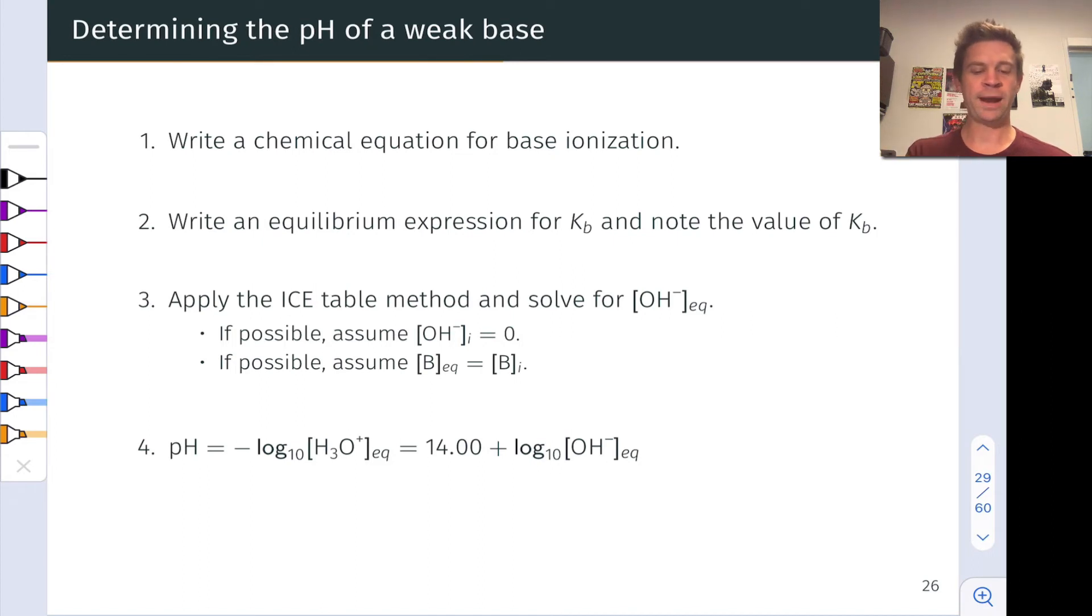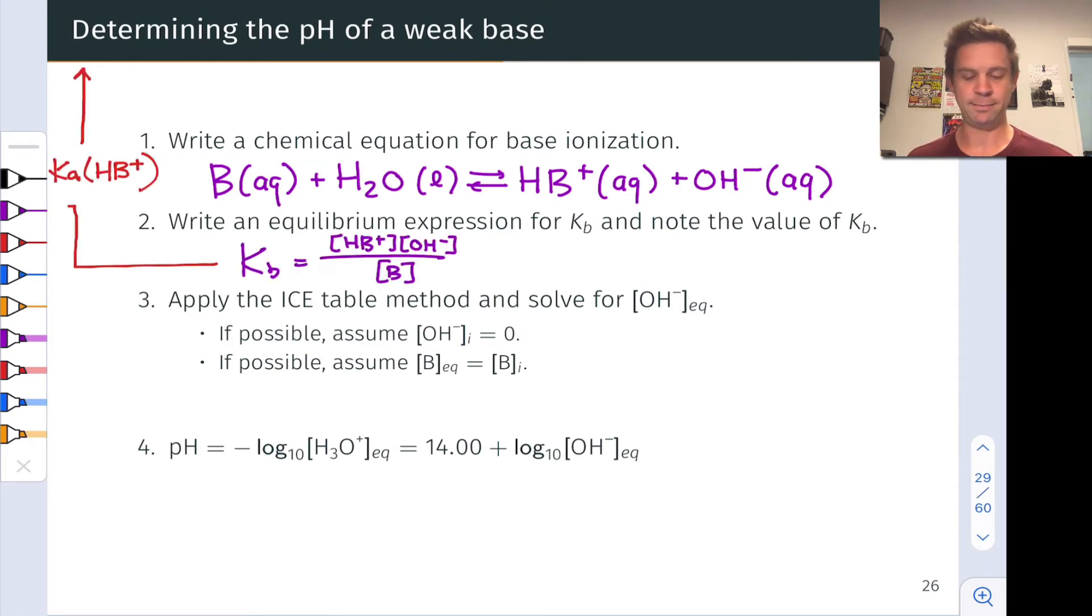we're going to write a chemical equation for base ionization, the reaction of the base with water, to produce the conjugate acid and OH⁻. This corresponds to Kb, the equilibrium constant of this reaction is Kb, and Kb is equal to HB⁺ times OH⁻ molarities divided by the B molarity, all at equilibrium.